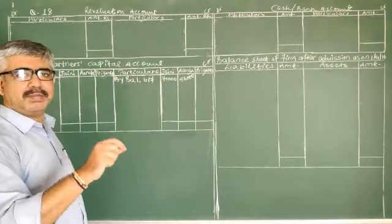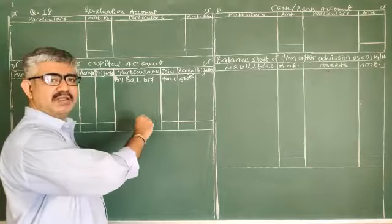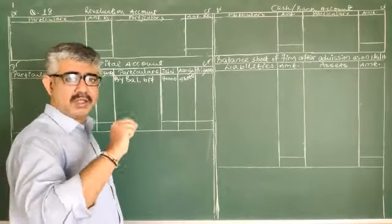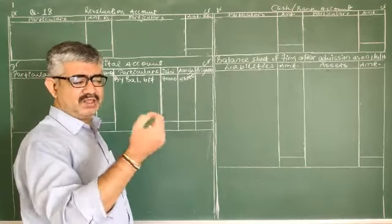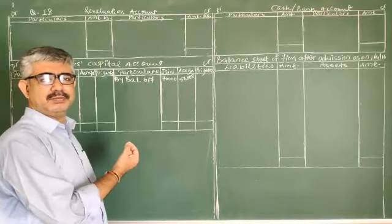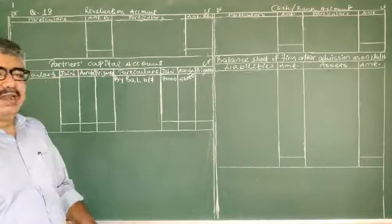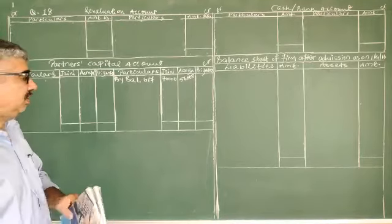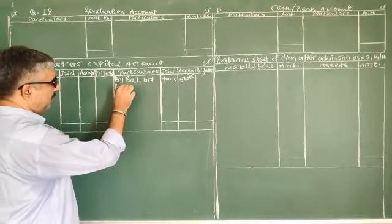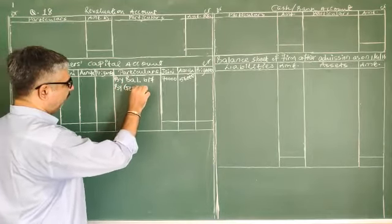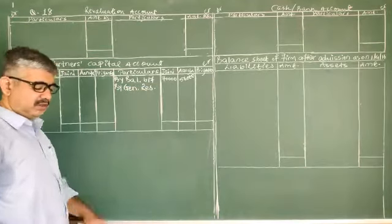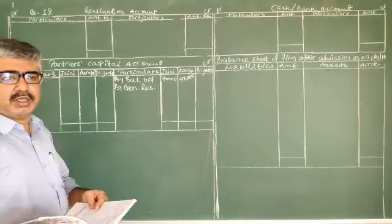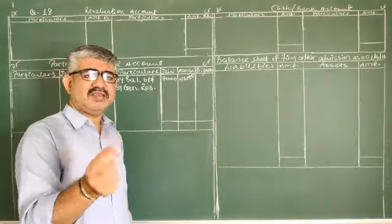Without watching the lecture, try to solve the problem on your own. Whenever you get stuck or feel confused, refer to the lecture. Once you go through the entire lecture, try to solve the problem by yourself. This approach will be much better. Then, General Reserve distribution: 8,400 in ratio 3:2 gives 5,040 and 3,360. Distribution is straightforward.